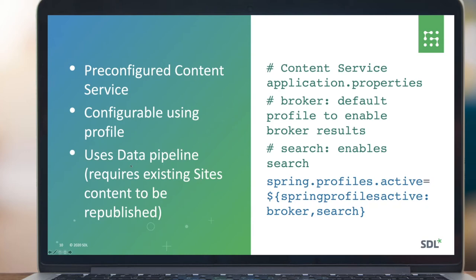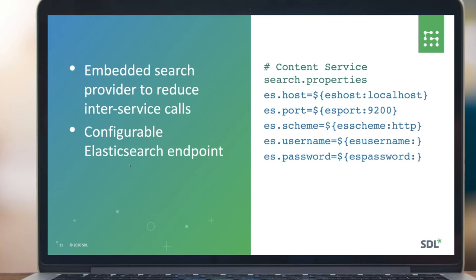It's worth reiterating that this whole search mechanism relies upon the new data pipeline content coming from Tridian Sites, so that does mean if you have existing content, you do have to republish it in order to have that content indexed within Elasticsearch. In terms of configuring this within the service, we have a search provider which talks to Elasticsearch underneath. This is why you need to add details of your Elasticsearch endpoint into the search properties — another new properties file for the content service — configured to point to your cluster.